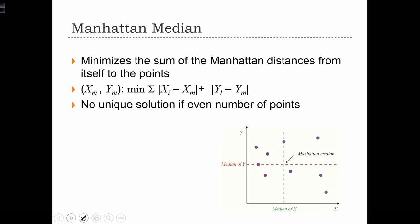The Manhattan median also has the property that it minimizes the sum of the Manhattan distances from itself to the points. So here we have the Manhattan medians and the Manhattan distances of each x_i, y_i, or each point to the Manhattan median point.